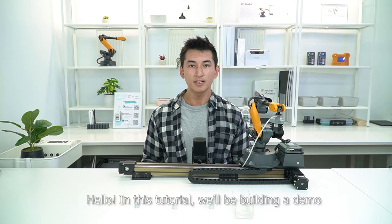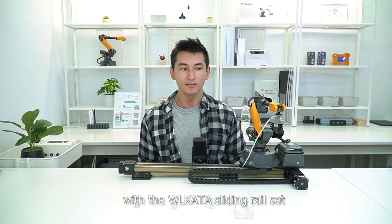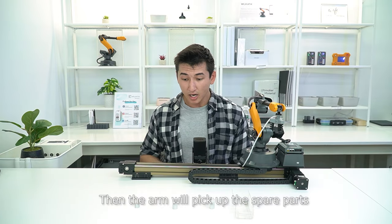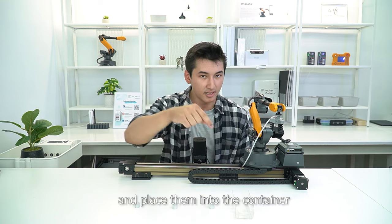Hello! In this tutorial, we'll be building a demo with the Wolkata Sliding Rail Set. We will be using the teaching mode to control the robot arm's movement on the rail. Then the arm will pick up the spare parts and place them into the container.